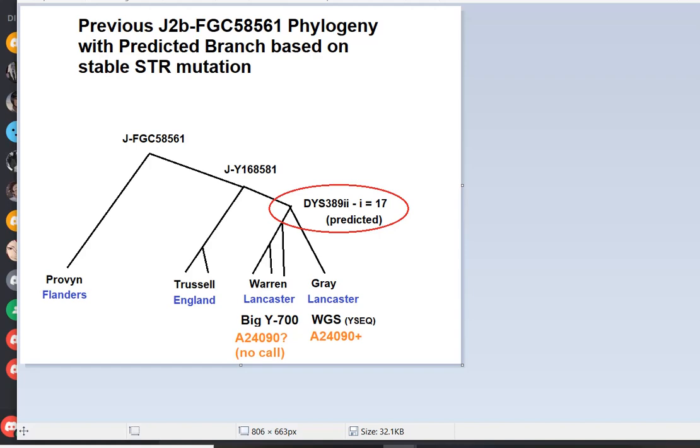But you see this tree, I have this thing circled in red that showed this was my prediction from the STRs. In fact, there was a novel SNP that Gray had from his WGS test at Y-Seq, A24090. SNPs discovered by Y-Seq start with A for Astrid-Kron.